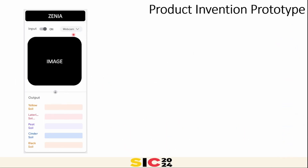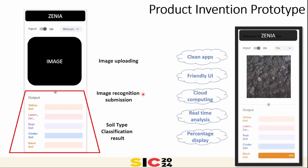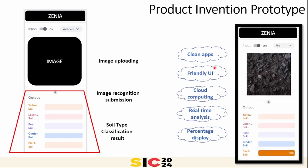This is the ZINNIA product. We have a place to upload a webcam image or file — this is where the image is uploaded. The output shows our soil type classification result in terms of a progress bar by percentage. Overall, we have a clean app with a friendly user interface: simple and easy — just upload the image and the result is done.